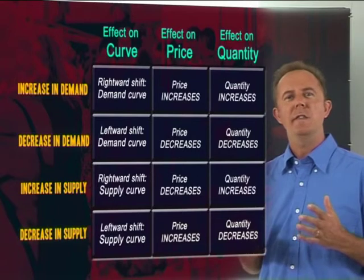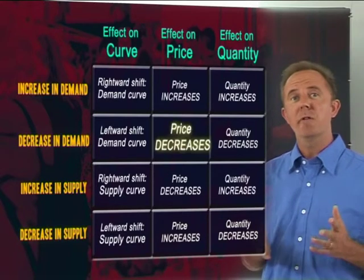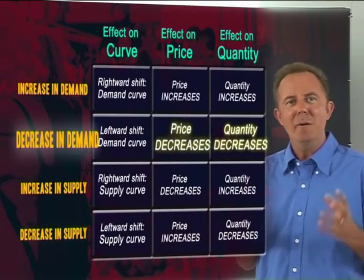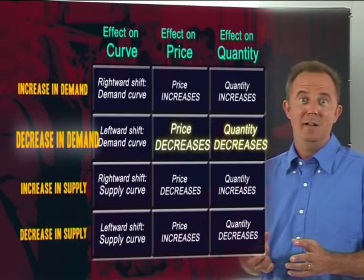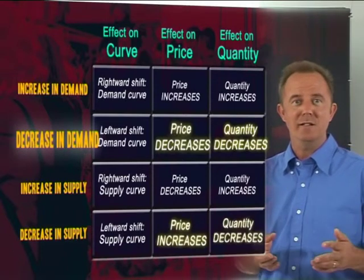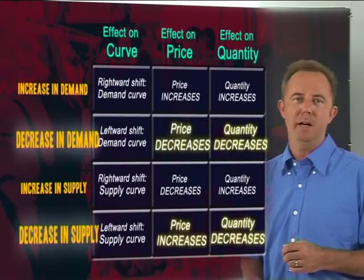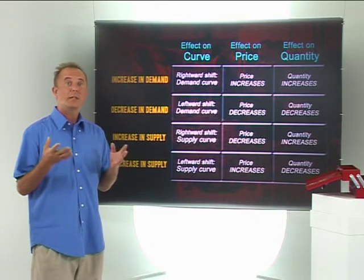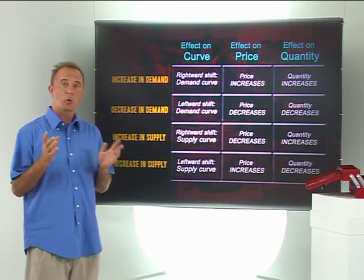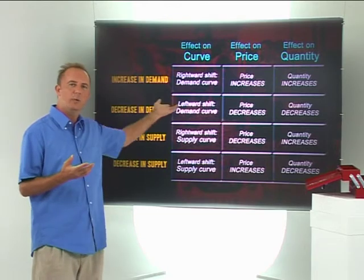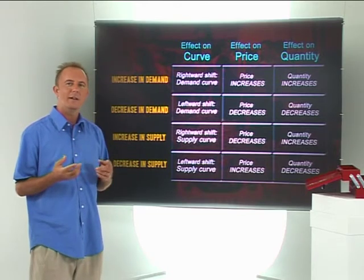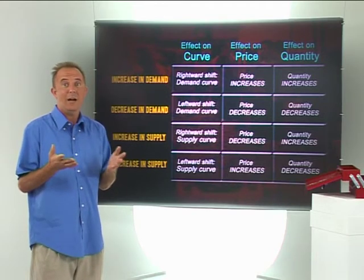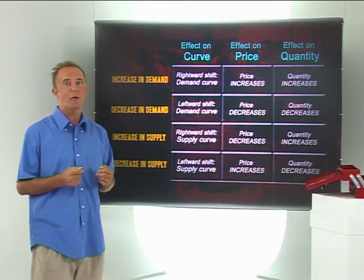Looking at the table, if both price and quantity fall, it must have been caused by a decrease in demand — the market has shrunk. And if price increases while quantity decreases, this is due to a decrease in supply. We now have a very useful tool to explain and predict the impact on prices and quantity. Take the time to get familiar with this table — it'll serve you well in this course and in your life as a consumer, and perhaps one day as a business person.